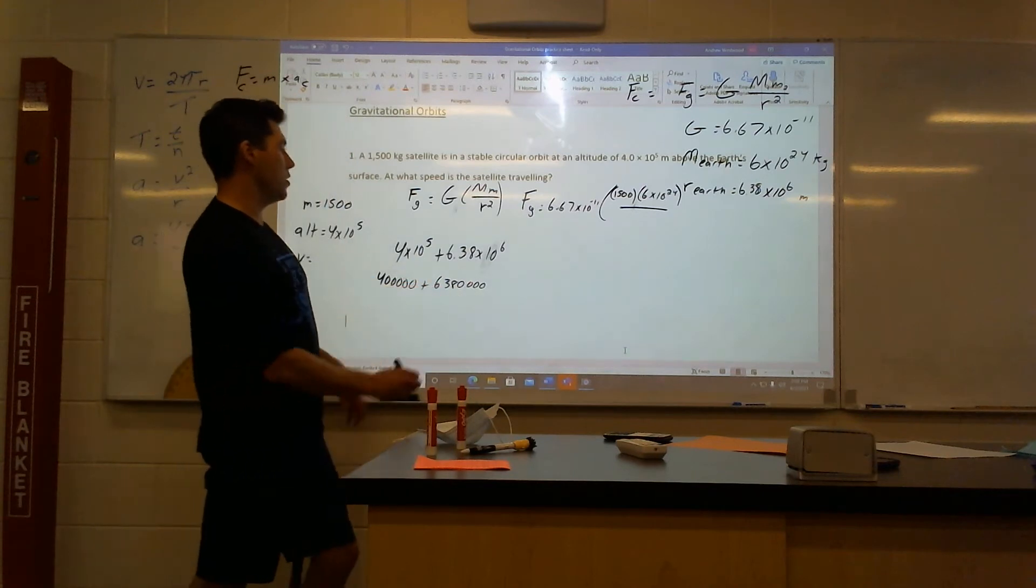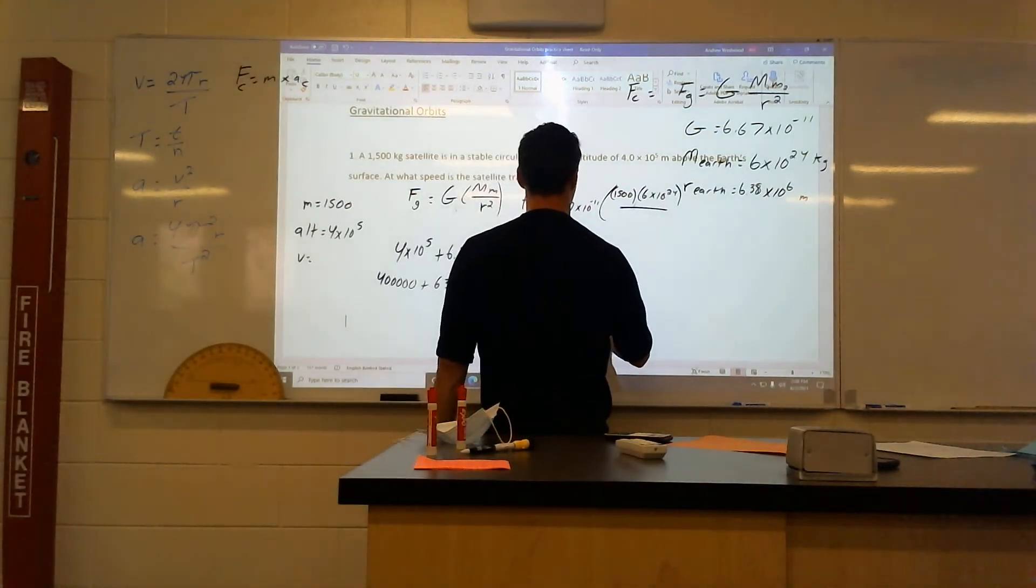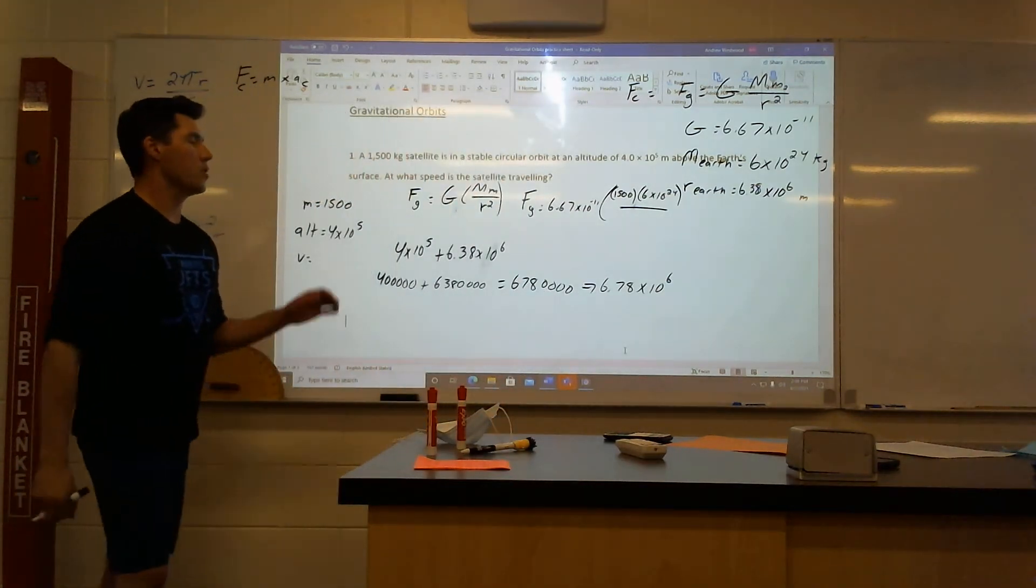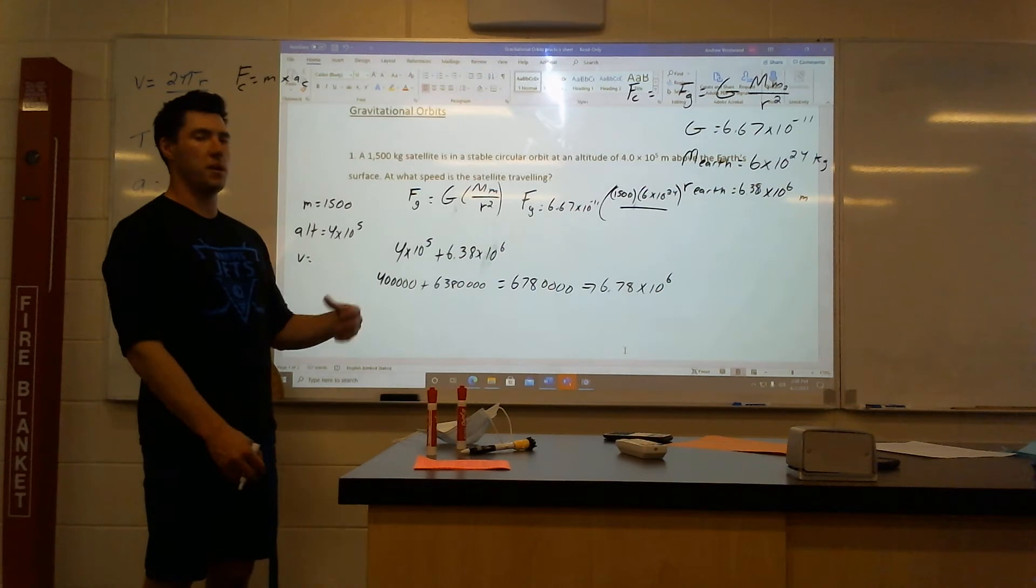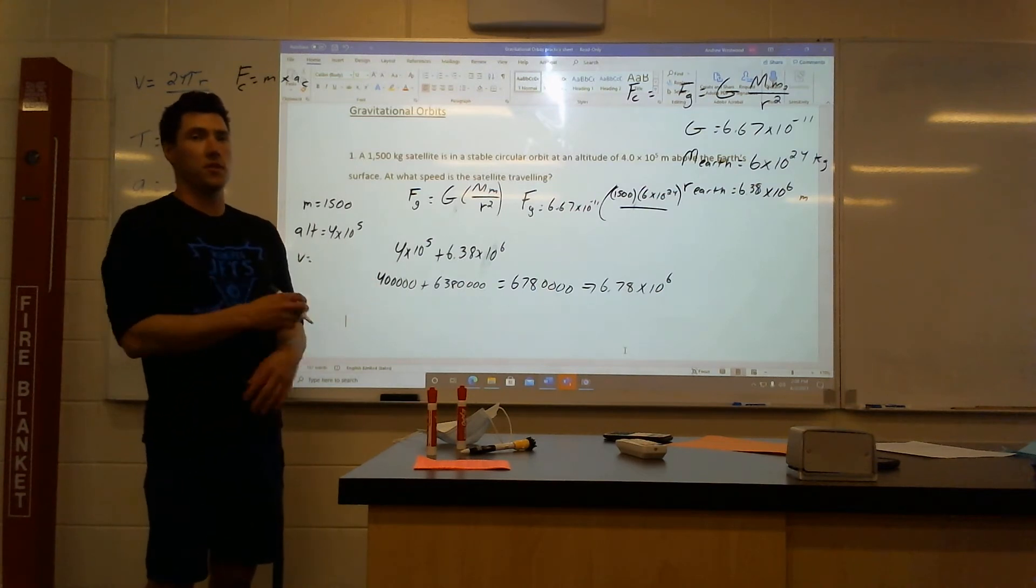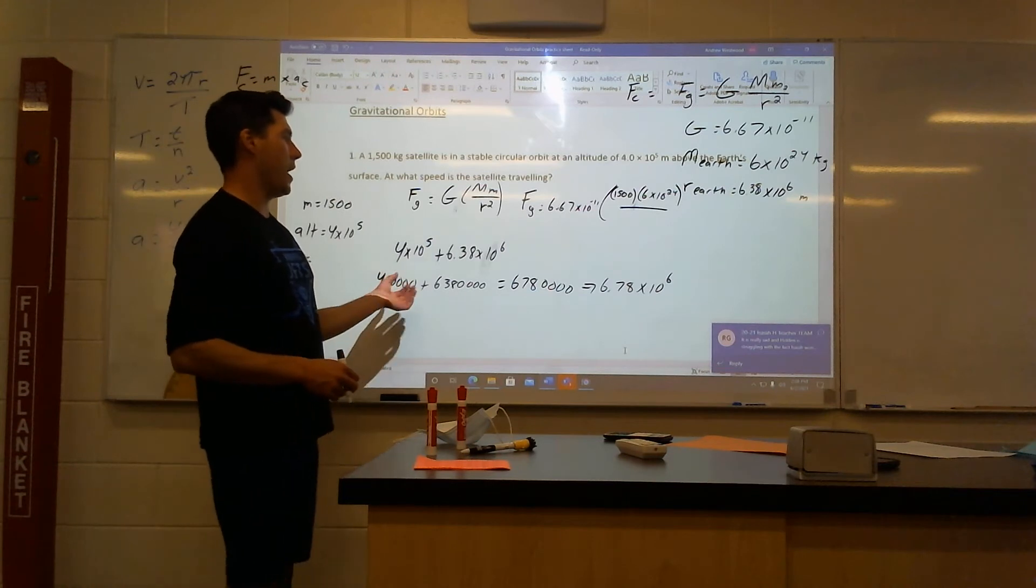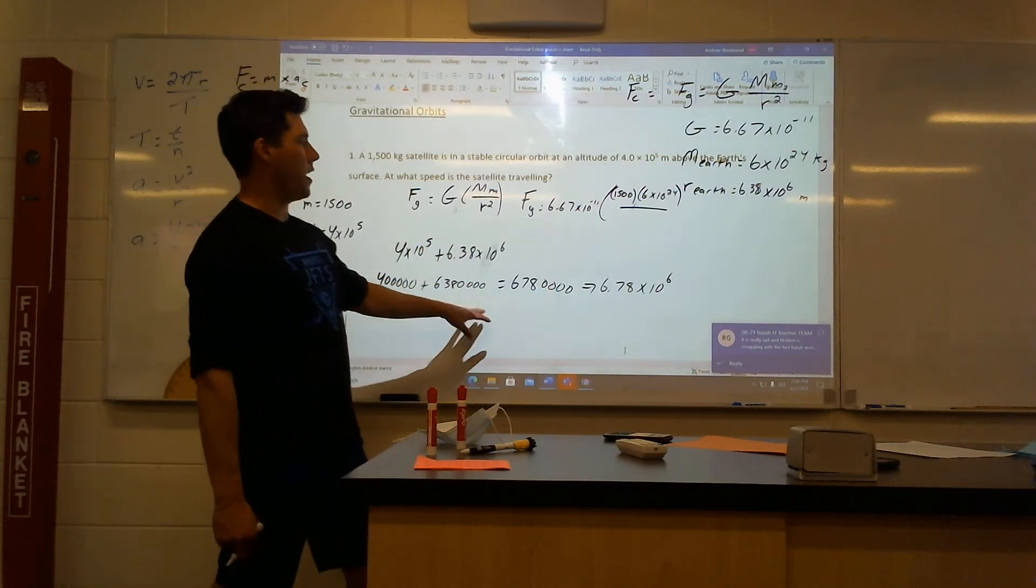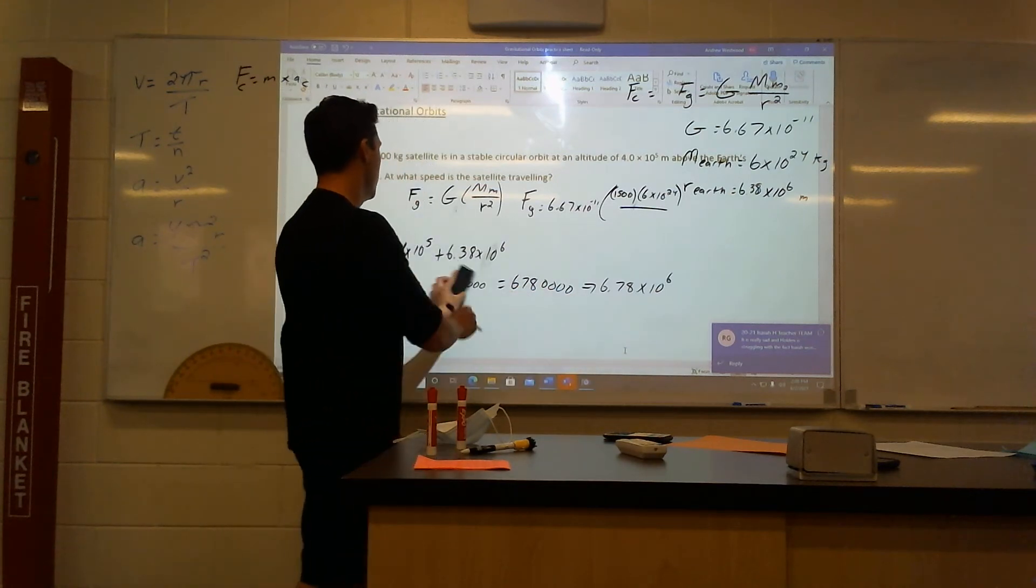I will say there's no nice way to add these scientific notation-wise. You just have to make them into real numbers. So like 4 with 1, 2, 3, 4, 5 zeros plus 6, 3, 8, 1, 2, 3, 4. Add those together. You will get 6.78 times 10 to the 6. When you're adding scientific notation, it doesn't work very well. You just have to actually make them to, I call them real numbers, non-scientific notation numbers, and then add them together. But when I do that, I end up with 6.78 times 10 to the 6. So we're going to use that as a radius. Let's get rid of this now.